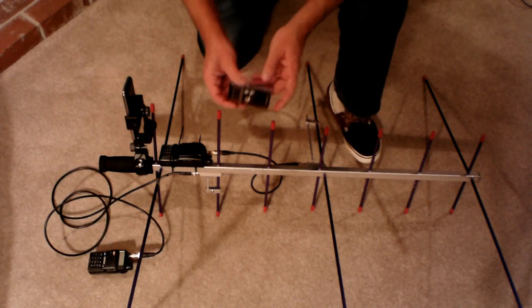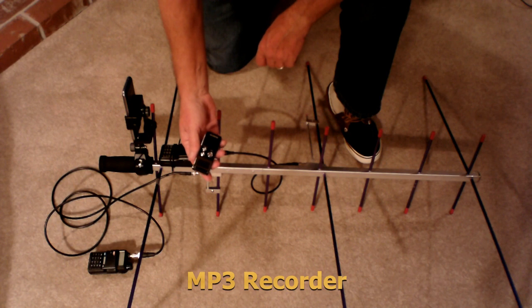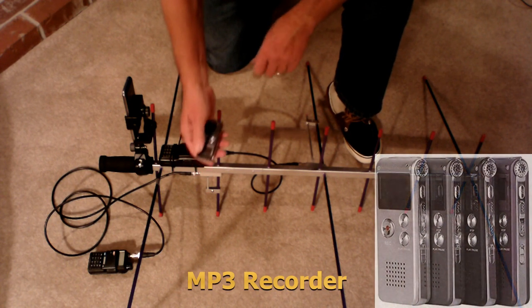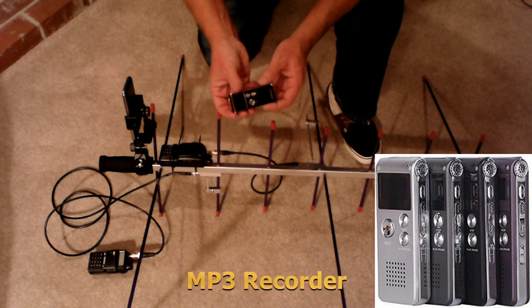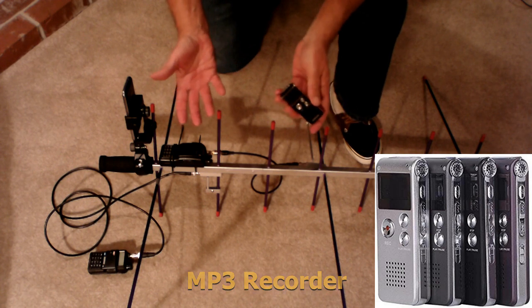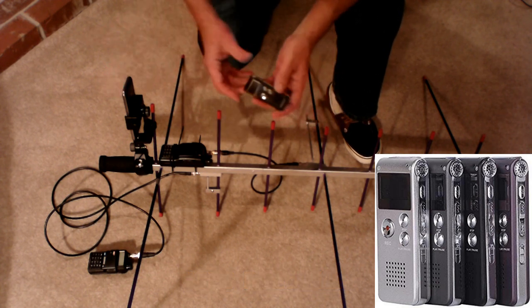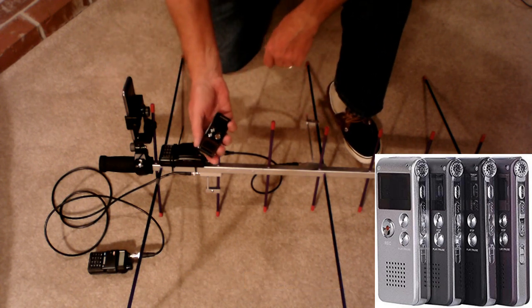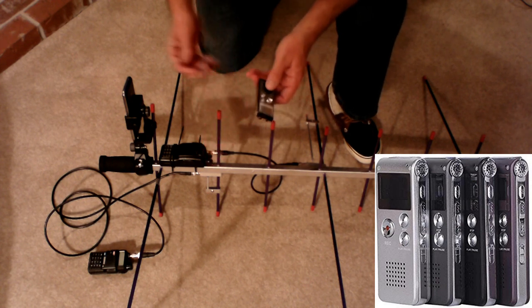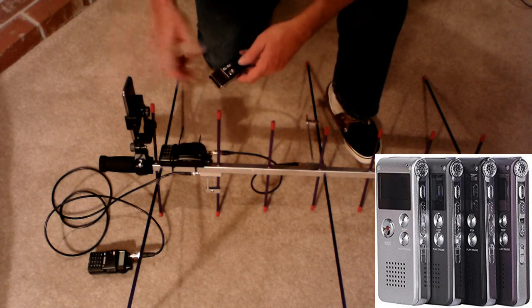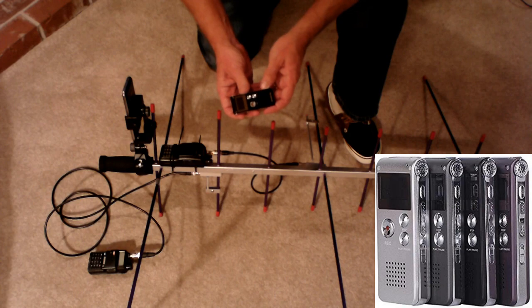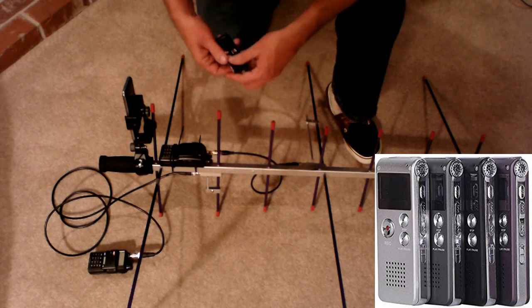Now, an important part of this station is the MP3 recorder. A lot of people, when they start out on satellites, ask, how can I log? I don't have any free hands left. Well, no problem. What you do is you record the pass. You can use a recorder on your phone. I like to use a separate recorder. I have an MP3 recorder for that.